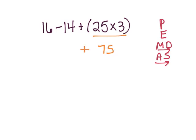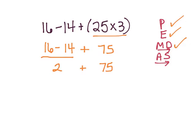I'm going to copy everything else just like it is. Are there any other parentheses? No, done with parentheses. Any exponents? No. Multiplication and division? I don't see any. Addition and subtraction — I do see some. I'm always going to go from left to right. Subtraction comes first, so I do 16 minus 14, which is 2. So I have 2 plus 75, which is 77. My answer is 77.